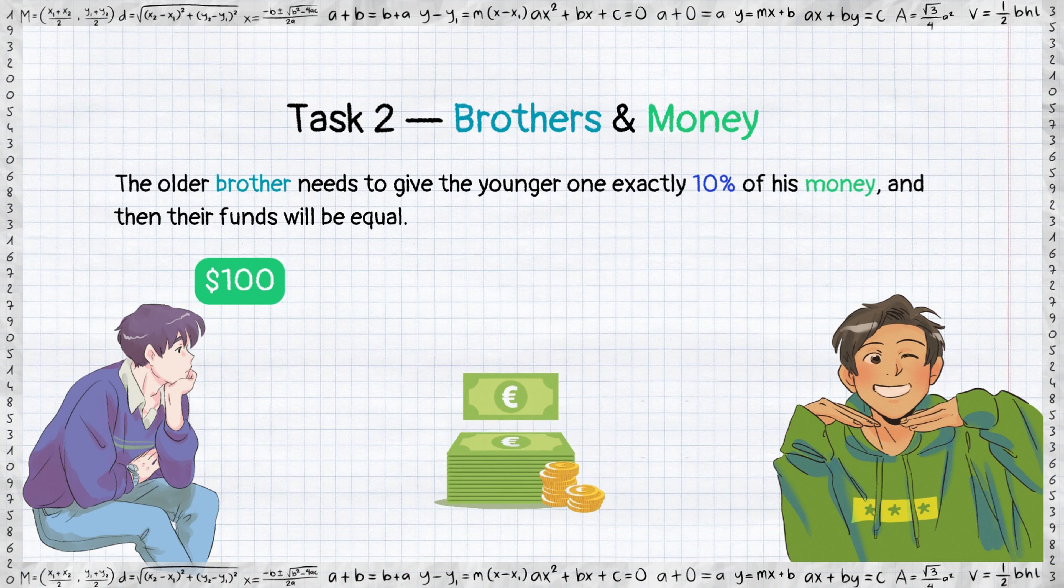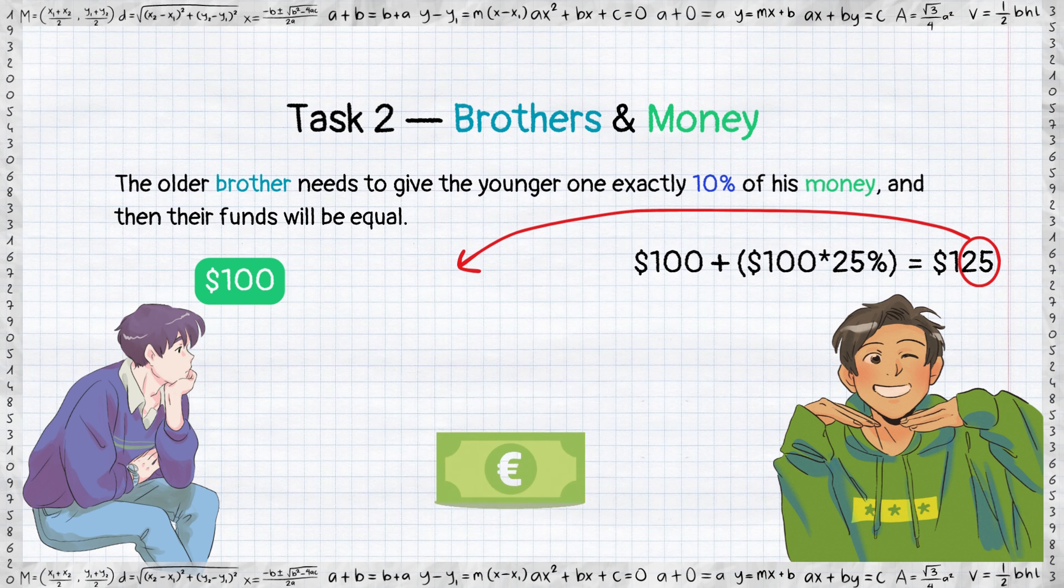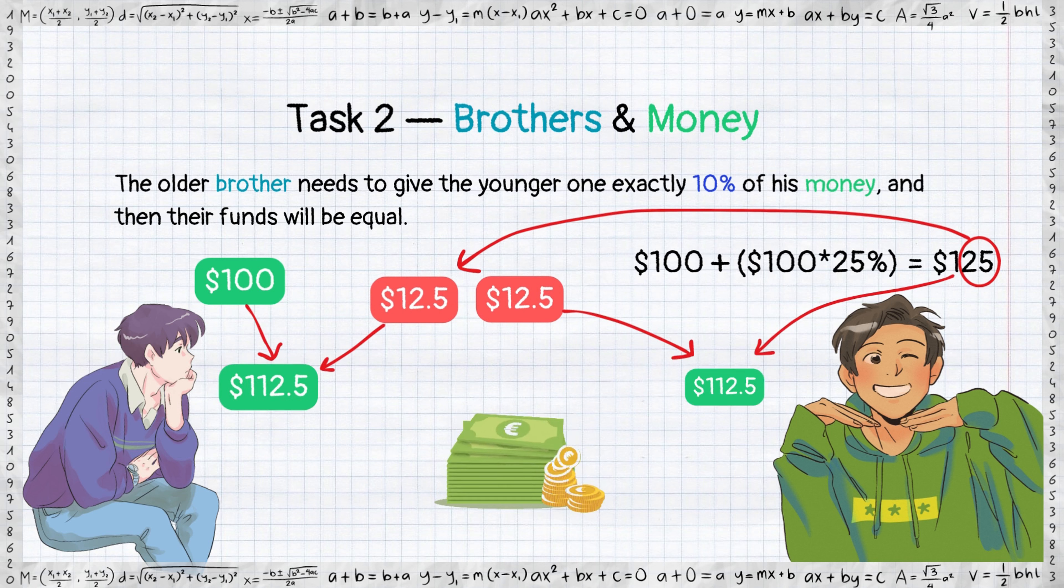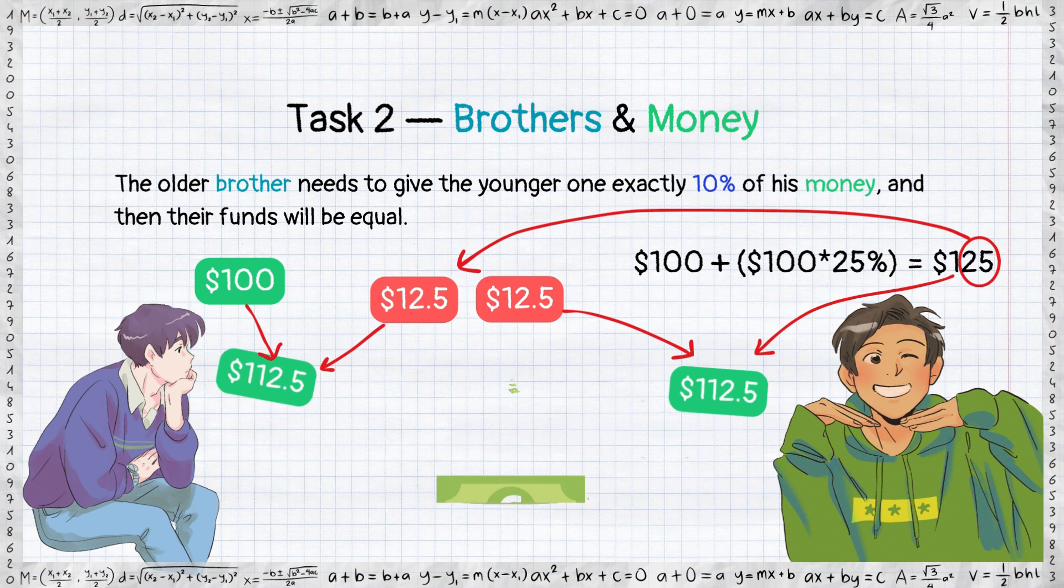To make their funds equal, we should divide 25 dollars into two equal parts. Now every brother owns 112.5 dollars. This 12.5 dollars represents 10% of the total that the older brother originally had.